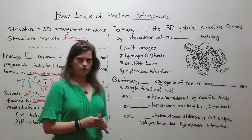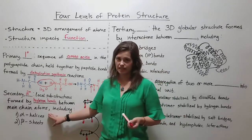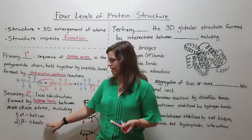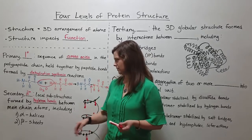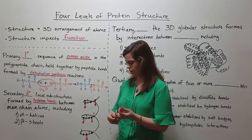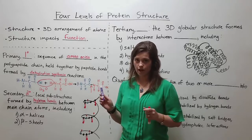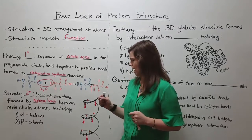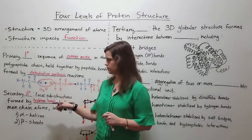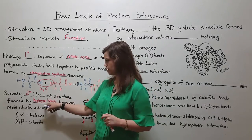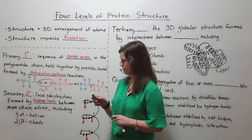You might have heard of the names of some of the secondary structures: alpha helices and beta sheets, or beta pleated sheets. These are the two main kinds of secondary structure. The important way to distinguish them from other types of protein structure has to do with the fact that they're local substructures specifically formed by hydrogen bonds between main chain atoms.